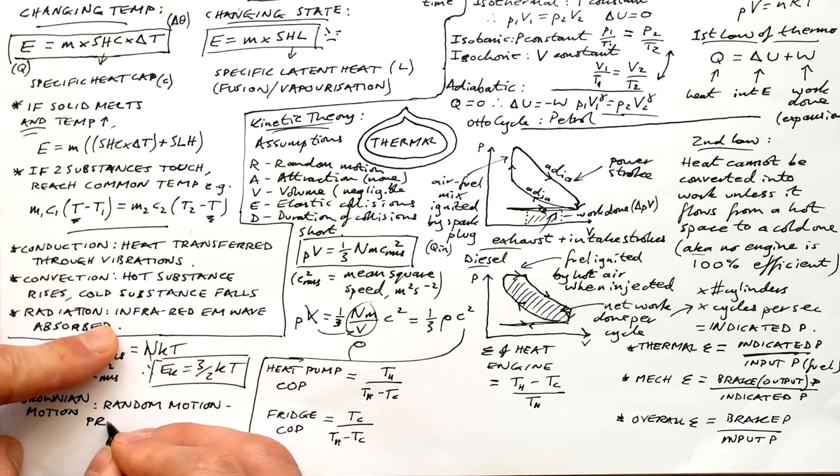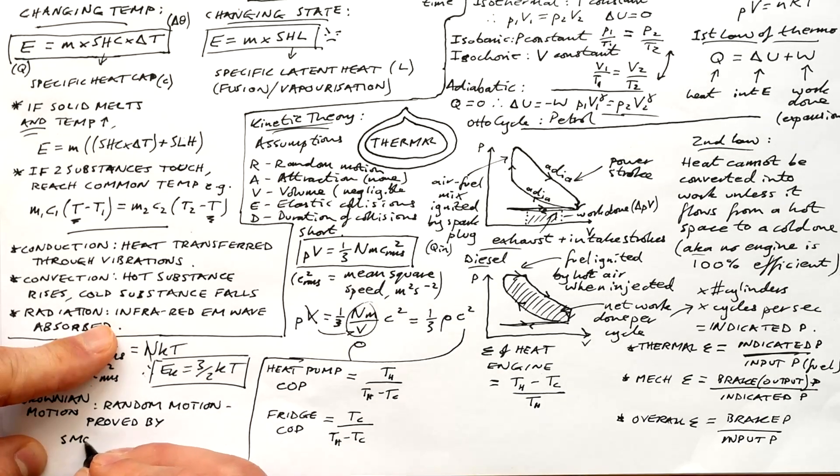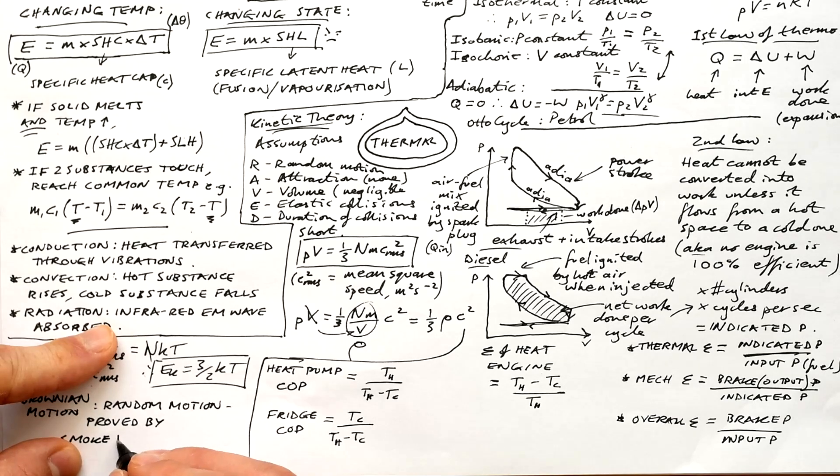Brownian motion, that just describes a random motion of particles inside of gas. And it can be proved by looking at small smoke particles. We can see the wiggling around, which means that we have air particles colliding with them randomly.